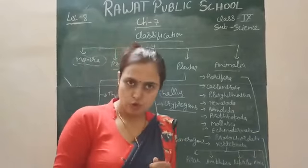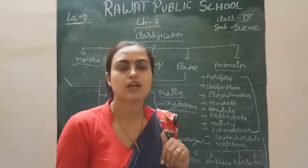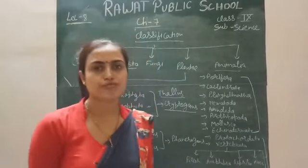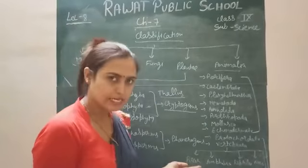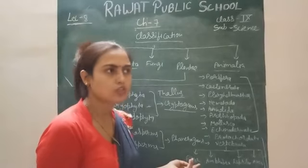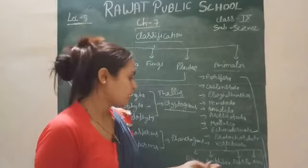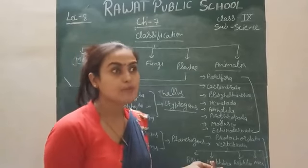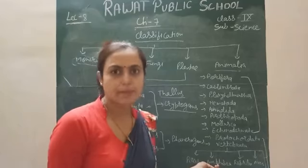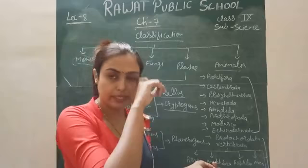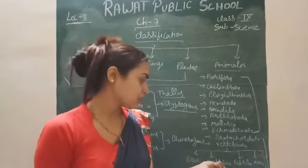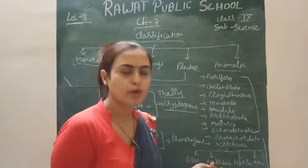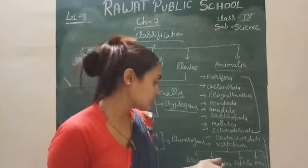After protochordates, vertebrates arise. Vertebrates have a notochord in all stages — both embryonic and adult. These vertebrates are further divided into five classes. Pisces are completely aquatic — cartilaginous and bony types of fish. They have fins for movement, a streamlined body, and a two-chambered heart. Next is Amphibia — they survive in both water and terrestrial areas. They have two complete chambers and a third chamber that is partially developed. They respire with lungs as well as skin, and their skin is moist with mucous glands.